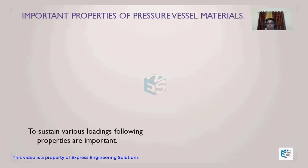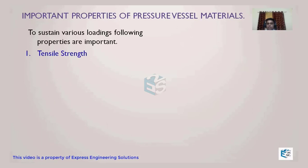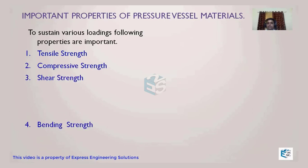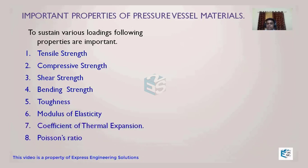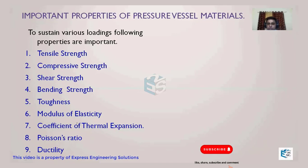So to summarize, the important material properties we have covered are: tensile strength, compressive strength, shear strength, bending strength, toughness, modulus of elasticity, coefficient of thermal expansion, Poisson's ratio, and ductility. These are all the important properties which any material should possess to take care of the various types of loading over the life cycle of the pressure vessel.